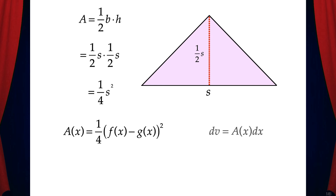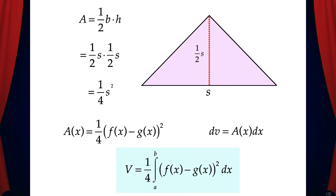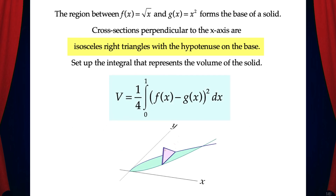And we know that dv equals A of x dx. That means the volume of the solid is one fourth times the integral from a to b of the quantity of f of x minus g of x squared dx. And back to our original problem, this means that the volume is one fourth times the integral from 0 to 1 of the quantity of f of x minus g of x squared dx.